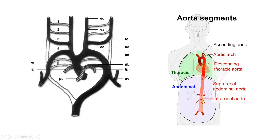How will the arch of the aorta form? The left half of the aortic sac, the left fourth arch artery, and the dorsal aorta in between the left fourth arch artery and the seventh intersegmental artery — all these things will form the arch of the aorta.